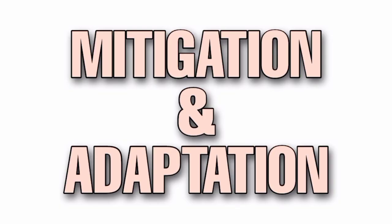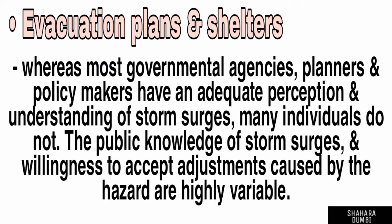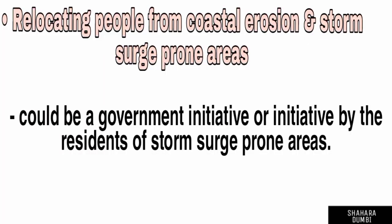Mitigation and adaptation. Evacuation plans and shelters — whereas most governmental agencies, planners, and policymakers have an adequate perception and understanding of storm surges, many individuals do not. The public's knowledge of storm surges and willingness to accept adjustments caused by the hazard are highly variable. Relocating people from coastal erosion and storm surge prone areas could be a government initiative or initiative by the residents.